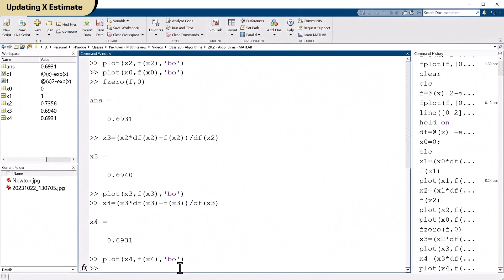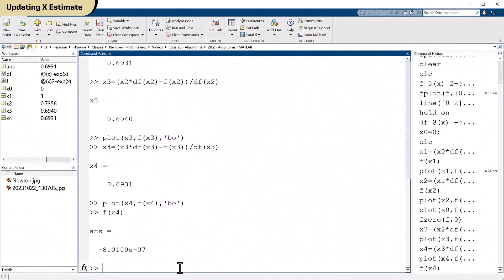So any good algorithm can estimate the error. And we can use that to form an exit criteria. Well, what is f of x4? Okay, that's minus eight times 10 to the minus seven. Well, that means we're awfully close to the root. Maybe if we said the absolute value of f of x has to be less than maybe one over 10,000, that would be good exit criteria.